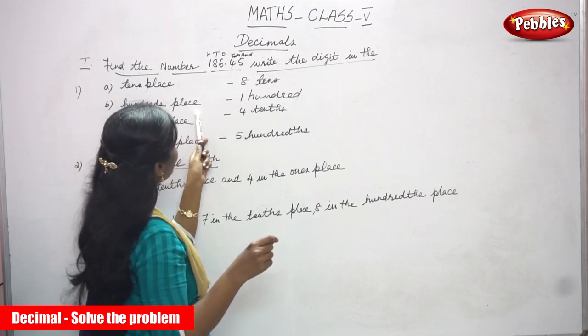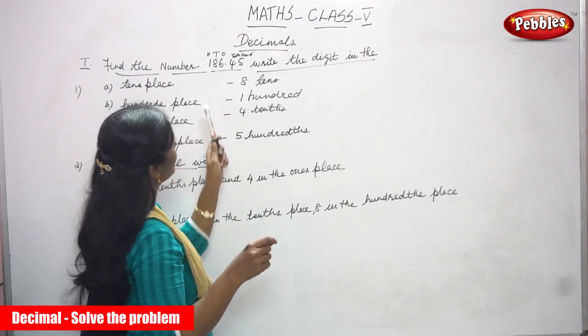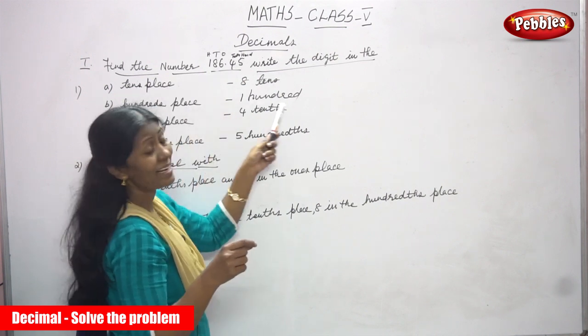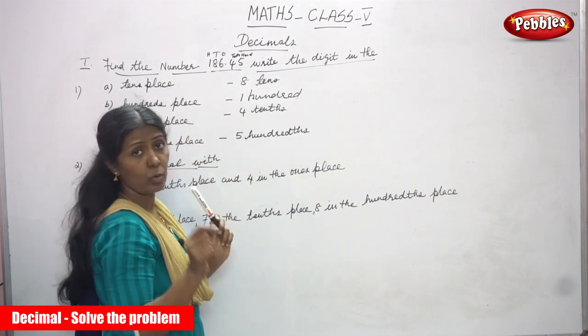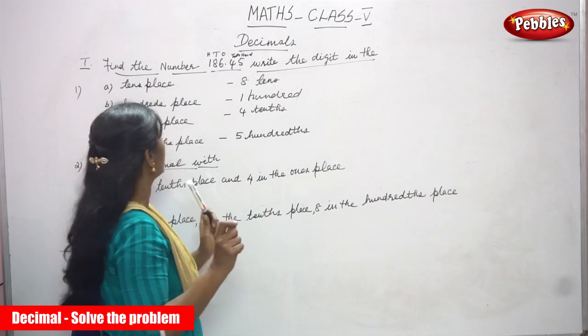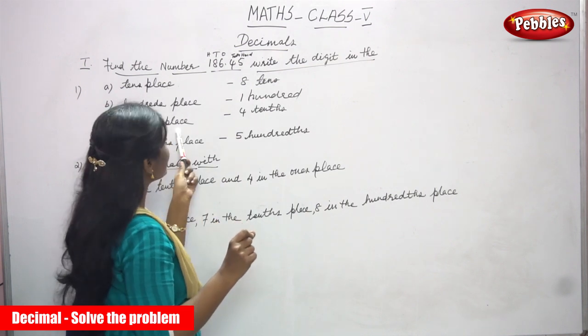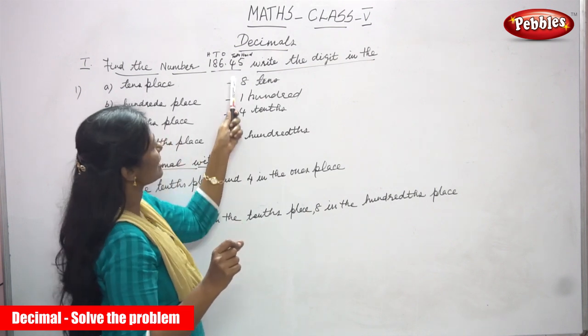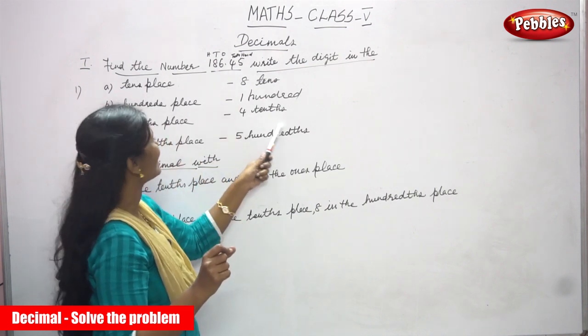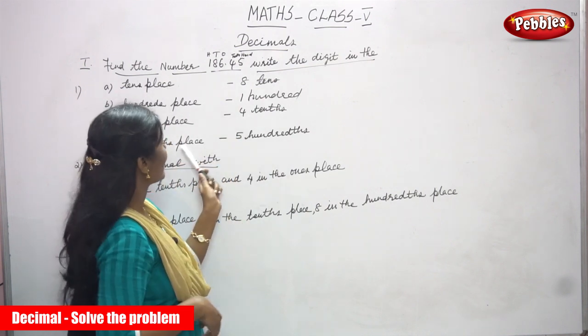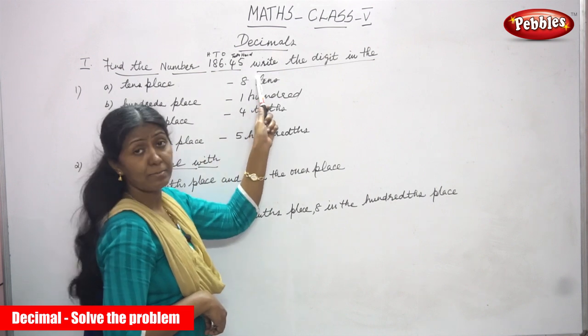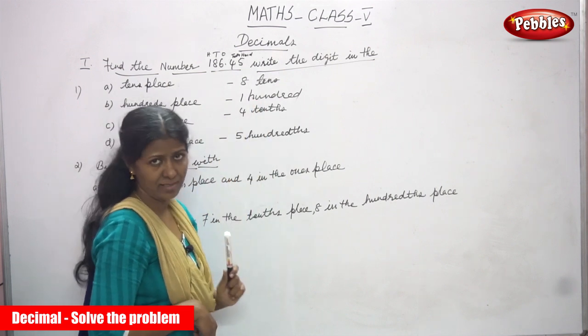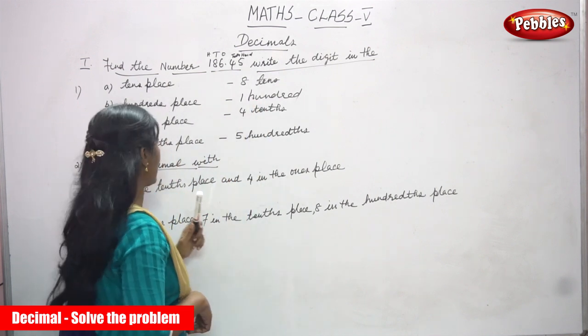And hundreds place, what is the number? That is 100. After the tens place, what is the number? 4 tens. And hundreds place, what is the number? 5 hundreds. So that's the answer.